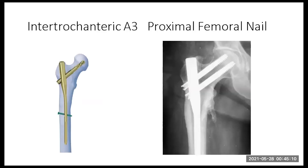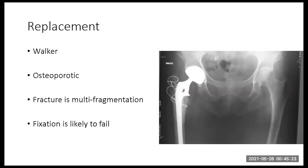In A3 fractures — the intertrochanteric ones — you would need a proximal femoral nail, such as the gamma nail, the InterTAN, or others. Replacement is done in very limited cases: the patient should be a non-walker or severely osteoporotic, and the fracture multifragmentary where fixation is likely to fail. In these cases, we can consider a primary replacement.